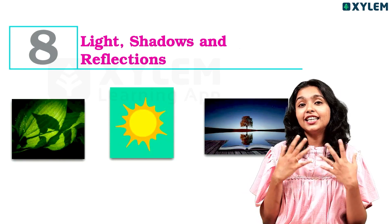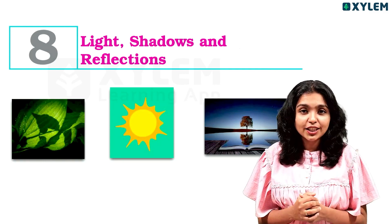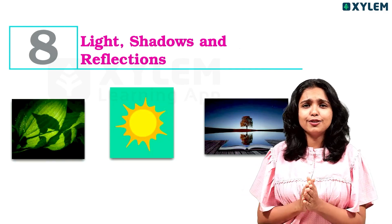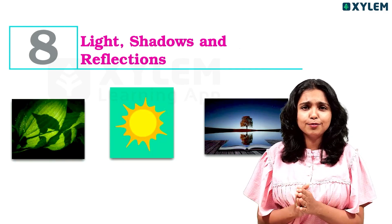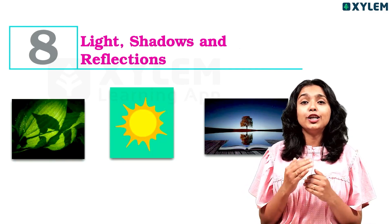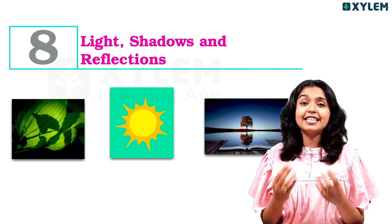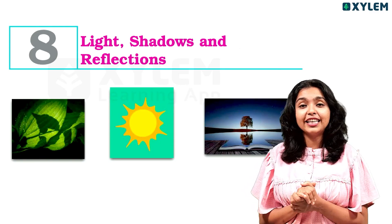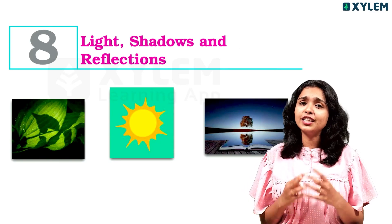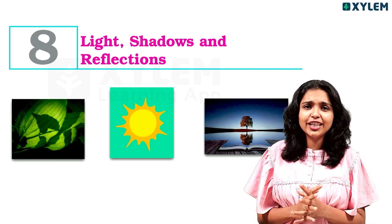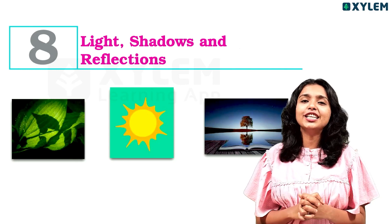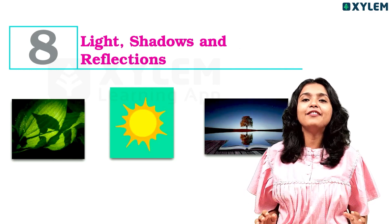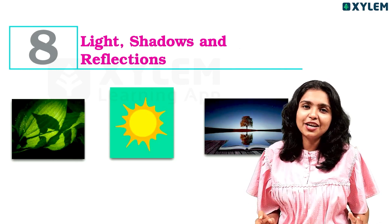We will cover what light is, what types of objects there are — like transparent, translucent, and opaque objects — and what exactly shadows are and the conditions under which shadows are created.